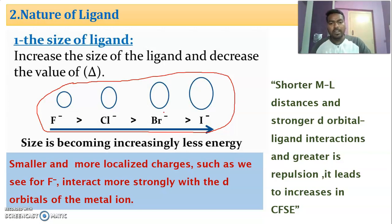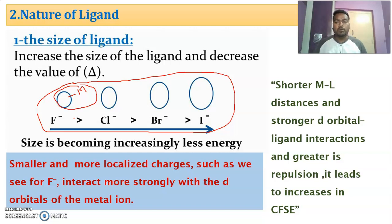In the halogen family, the size of iodide is more than that of fluoride. But the size of the ligand is inversely proportional to crystal field stabilization energy. Because of the small size of a ligand, the metal–ligand distance is very small. If the distance is very small, the interaction and repulsion are also more. If repulsion is more, the crystal field stabilization energy is also more. That is why in the spectrochemical series, iodine is the weakest ligand and its CFSE value is very small.